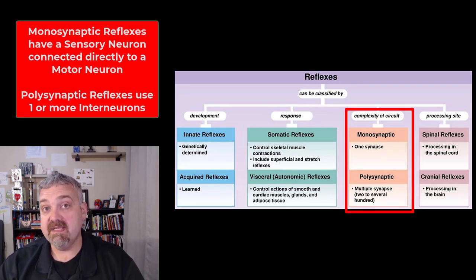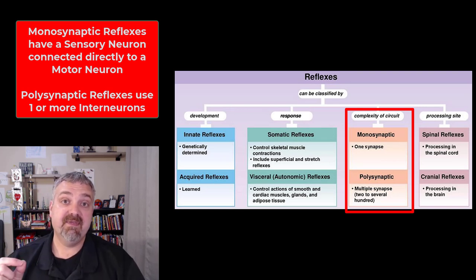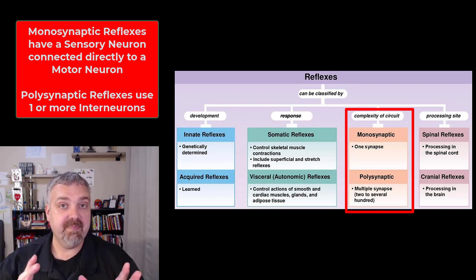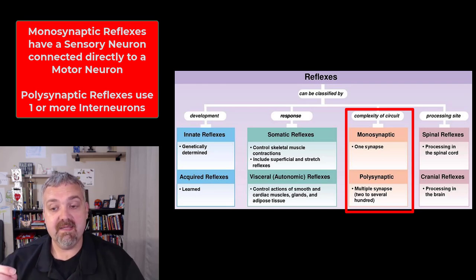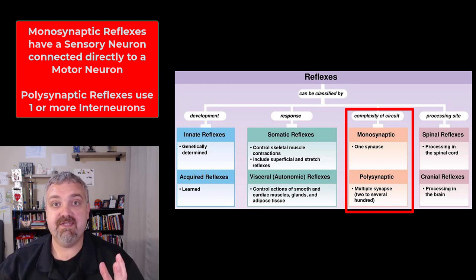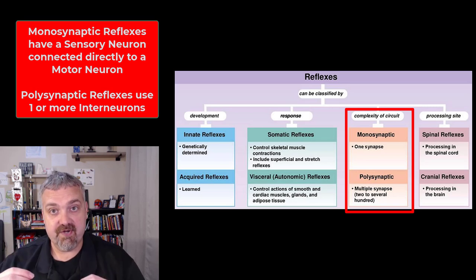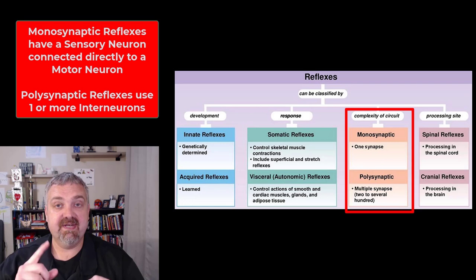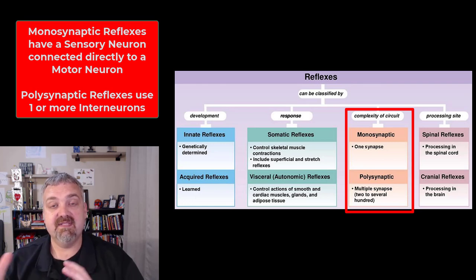Reflexes can be monosynaptic or polysynaptic. A monosynaptic reflex has one synapse, meaning it's a sensory nerve connected directly to a motor nerve — those are the fastest but least complex reflexes we have. Polysynaptic reflexes can have hundreds of synapses and involve interneurons, allowing for much more coordination of a response, though they take a little longer.